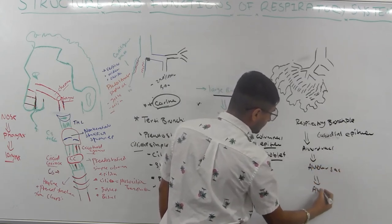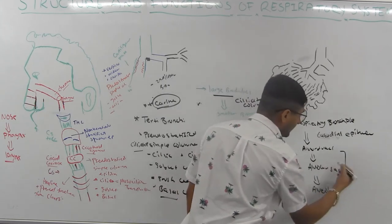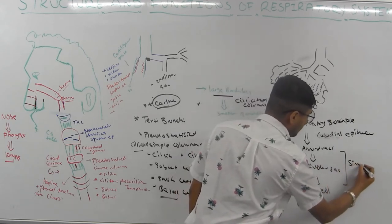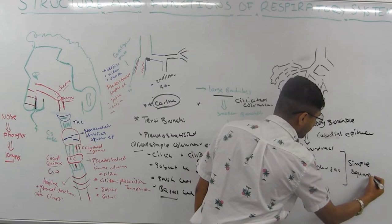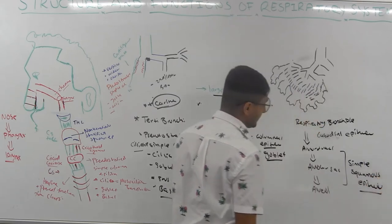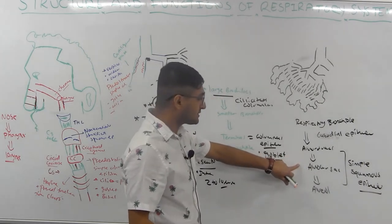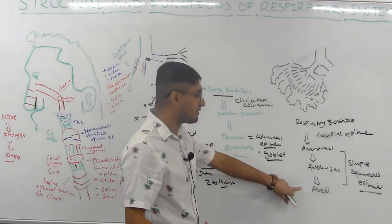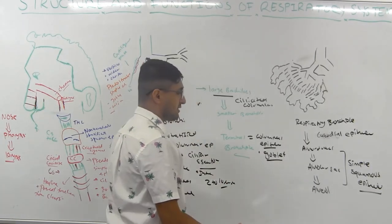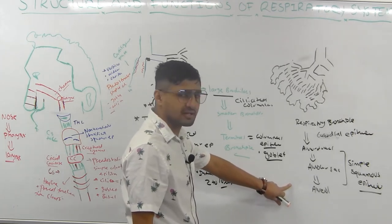From alveolar sacs, you get your alveoli. The alveoli are lined by very thin simple squamous epithelium. For gas exchange, you need a large surface area. There are about 300 million alveoli, and if you add up all their surface area, it totals about 80 square meters — roughly half a tennis court.